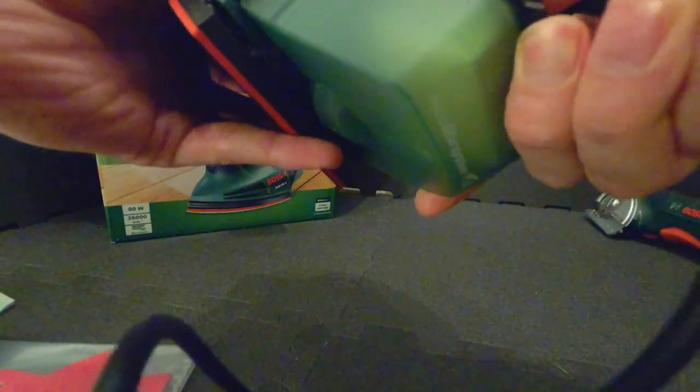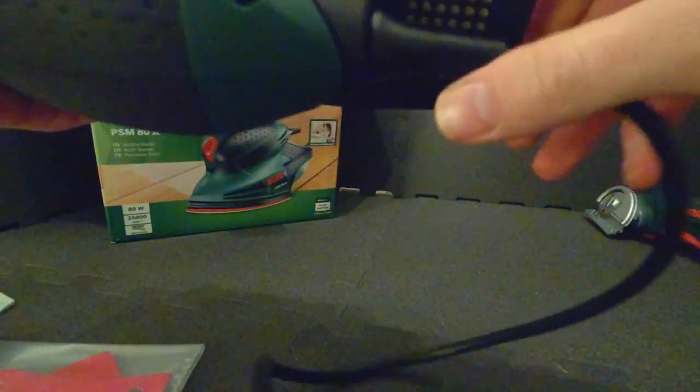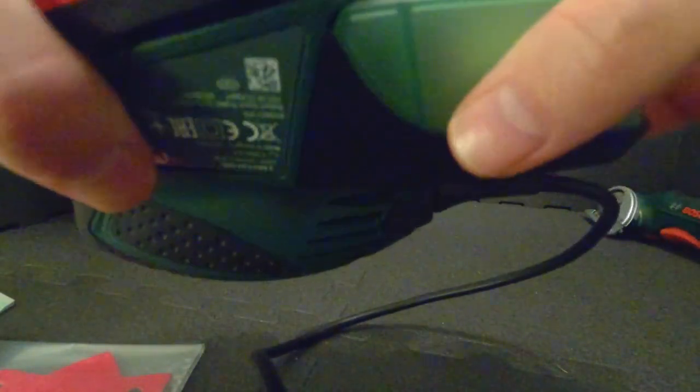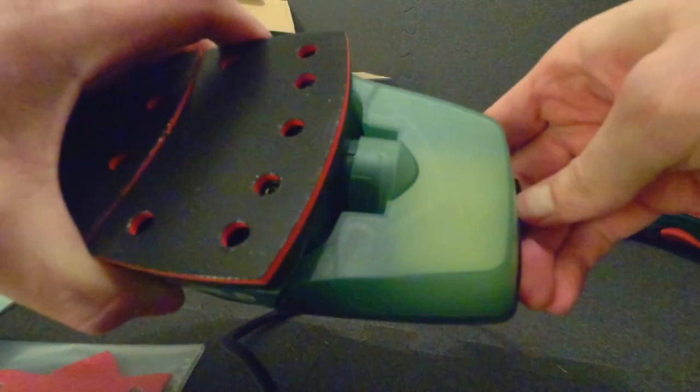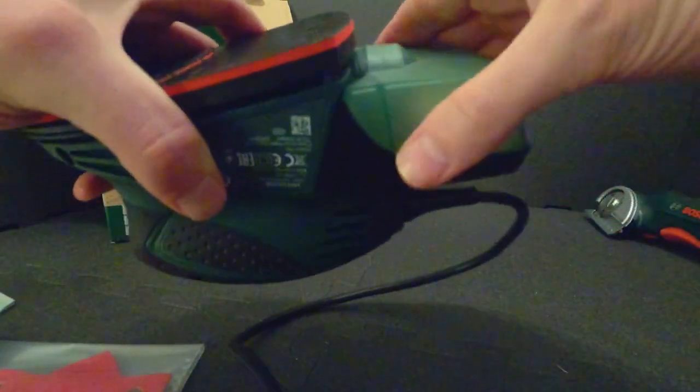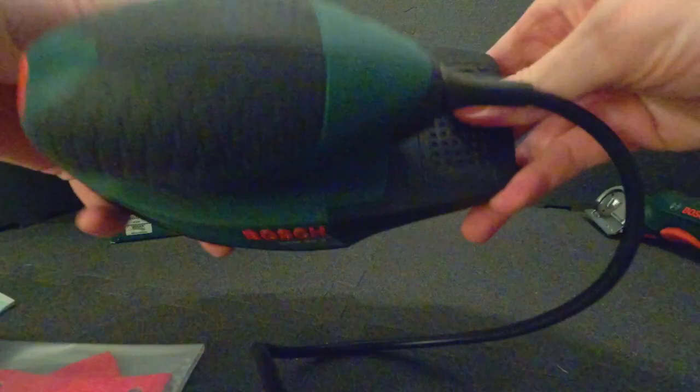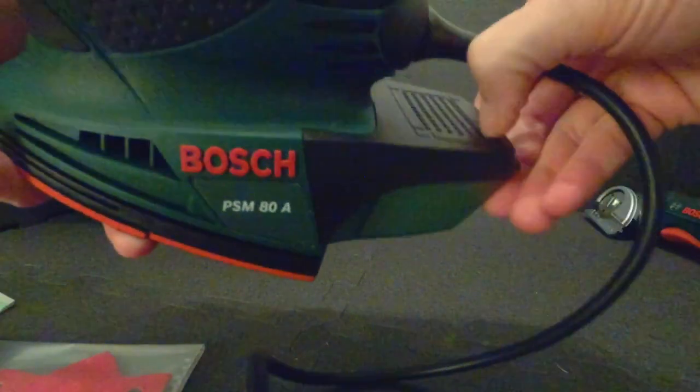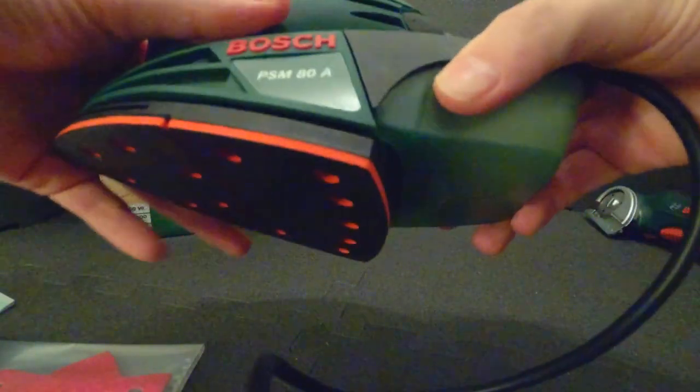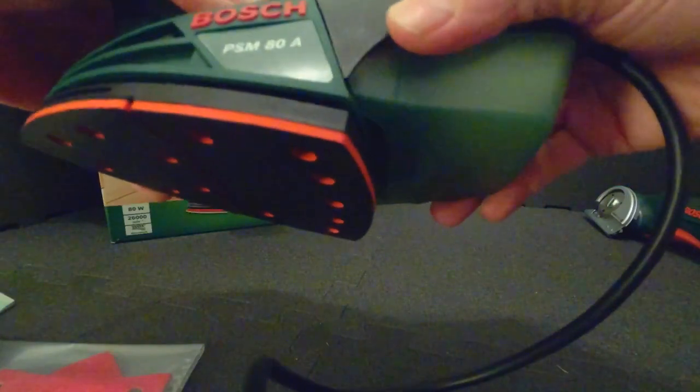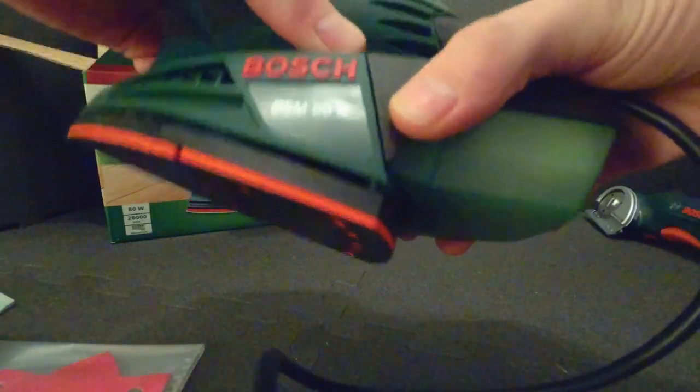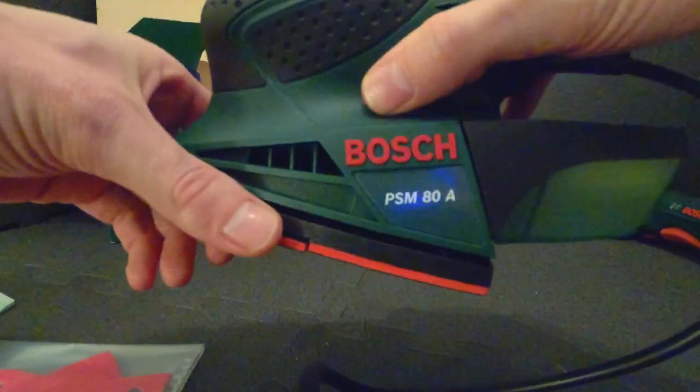It looks like it has some kind of a container in the back here. Which I don't know what that might be for, but maybe it's to collect all the dust or something when you use it. This is how it looks like.